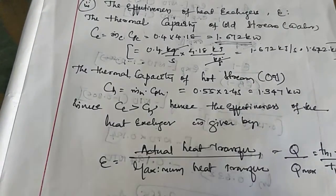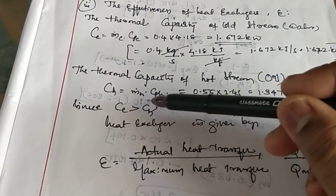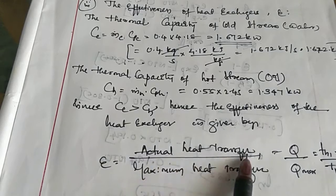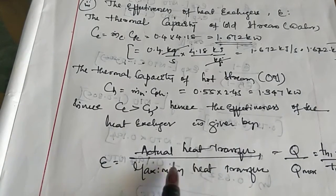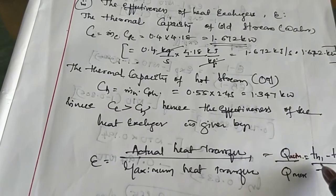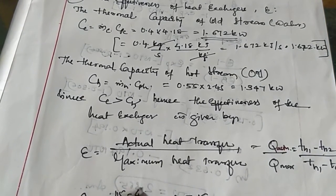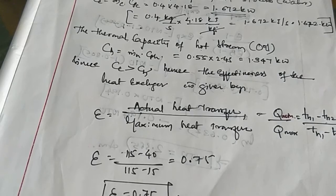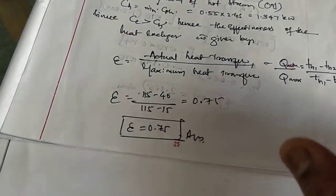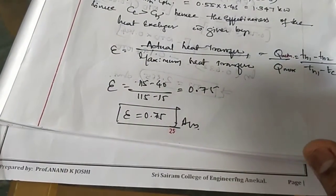From these values, the thermal capacity of the cold stream is greater than that of the hot stream. Hence, the effectiveness of the heat exchanger is given by actual heat transfer divided by maximum heat transfer: ε = Q_actual / Q_max = (T_H1 − T_H2) / (T_H1 − T_C1) = (115 − 40) / (115 − 15) = 0.75.